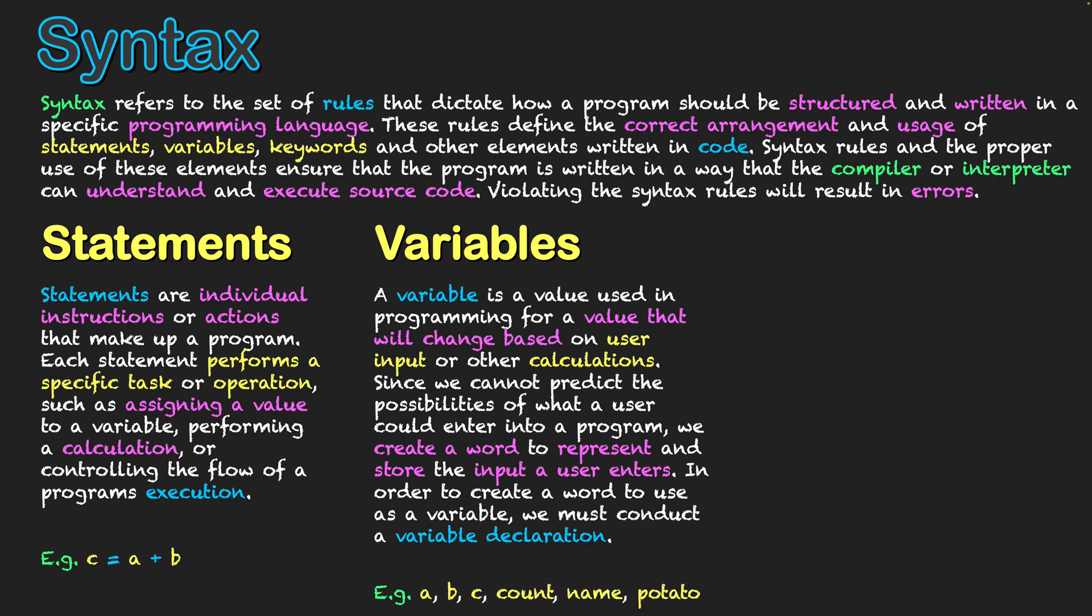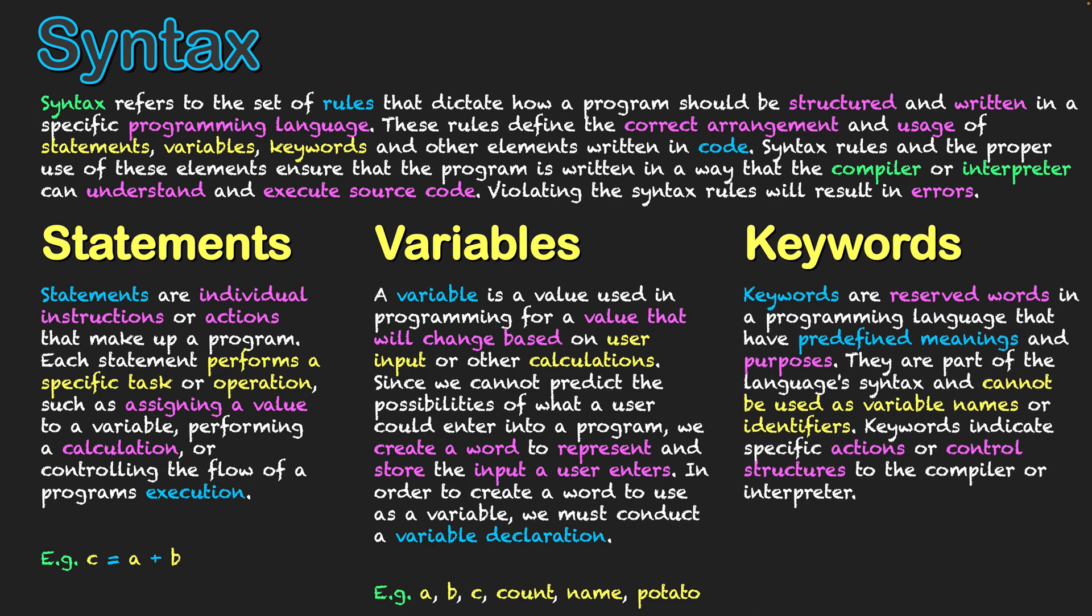As we said from the statement scenario, a, b, and c used in that context could be my variable names, although they're not very meaningful to what the calculation is that I might be doing within my program. But then we could also have ones that have more relevance to what they might be used for in my program, such as count or name. They probably align to keeping track of the number that is being counted or the entry of a name into the system. With my last one, potato, we can call our variables anything except if they conflict with one other category of syntax rules within my program, and that is keywords.